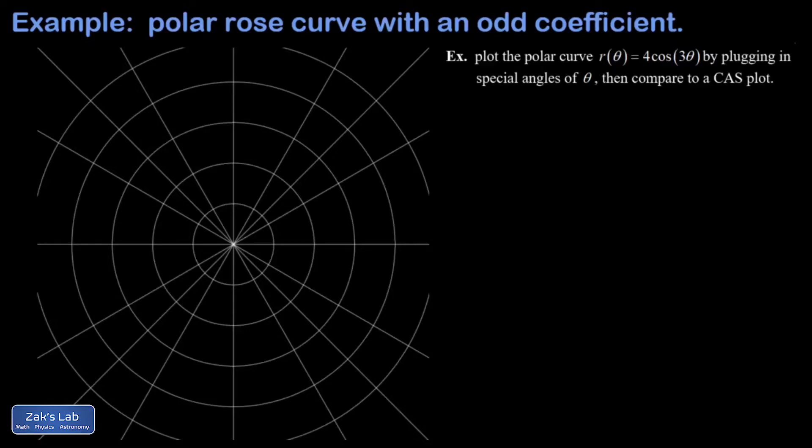In this video we're constructing the plot of a polar equation known as a rose curve. We're going to do this by just plugging in a bunch of special angle points until we get a sense for what the graph is going to do.